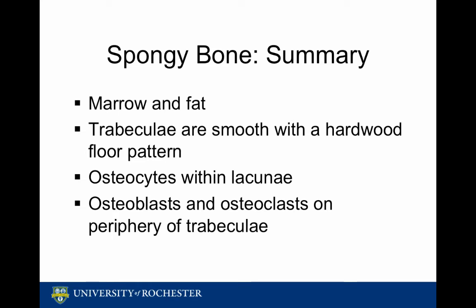Some key points to remember about spongy bone: it's the only type of bone that will contain marrow and fat. Spongy bone will also have trabeculae which are smooth with a hardwood floor pattern. Cells found in spongy bone include osteocytes, which are trapped in the lacunae, and osteoblasts and osteoclasts, which tend to hang around the periphery of the trabeculae.